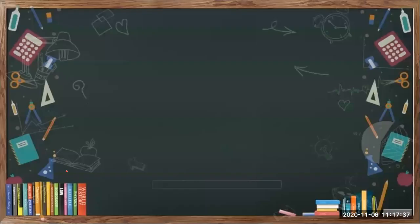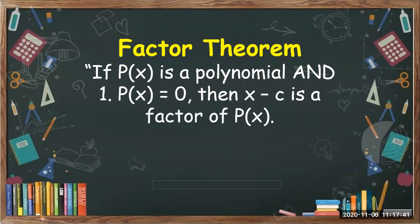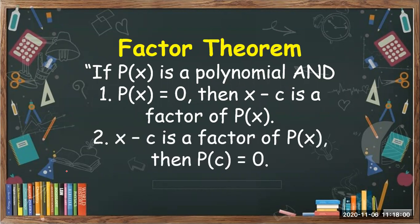The Factor Theorem states that if P(x) is a polynomial and P(c) is equal to 0, then X minus C is a factor of P(x). This means that when we evaluate the given function and the remainder is 0, it means the divisor is a factor of the given polynomial function. Likewise, vice versa, if the divisor is a factor of P(x), then automatically its remainder, or P(c), is 0.